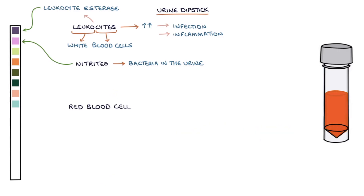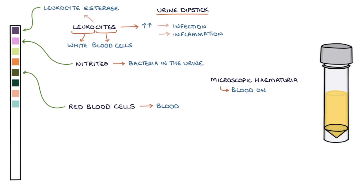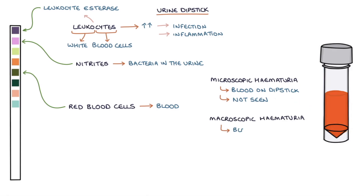Red blood cells in the urine indicate blood. Microscopic hematuria is where blood is identified on a urine dipstick but not seen when looking at the sample. Macroscopic hematuria is when blood is visible in the urine. Hematuria is a common sign of infection, but can also be present with other causes, such as bladder cancer or nephritis.